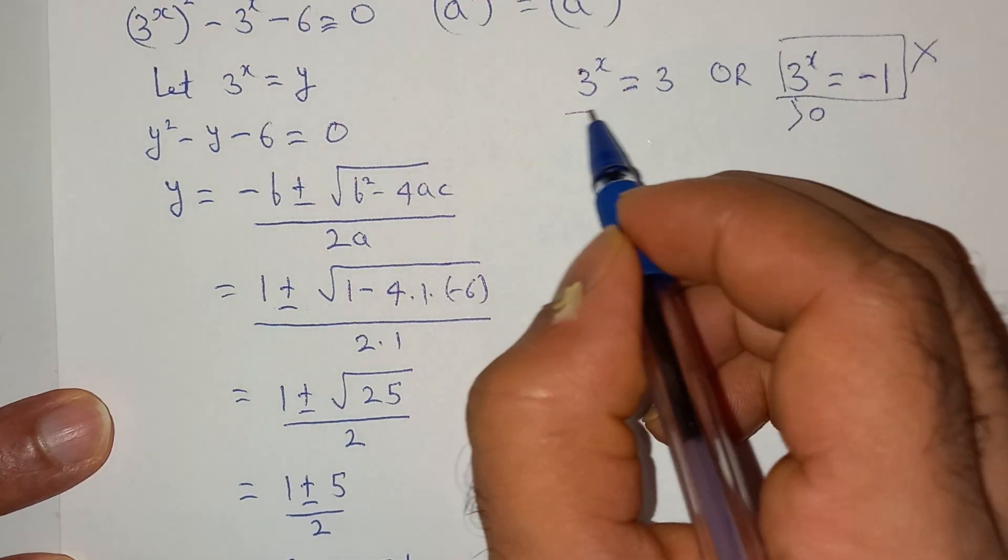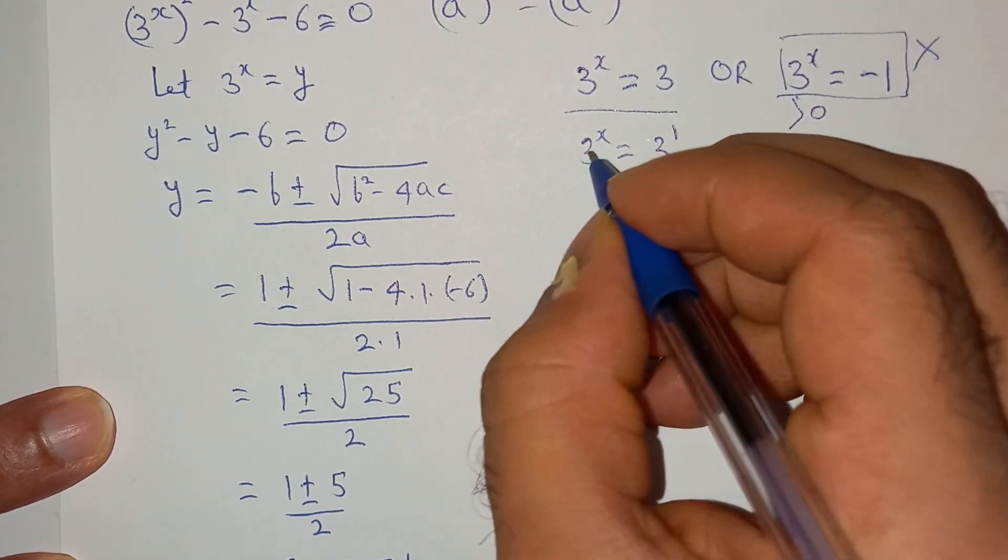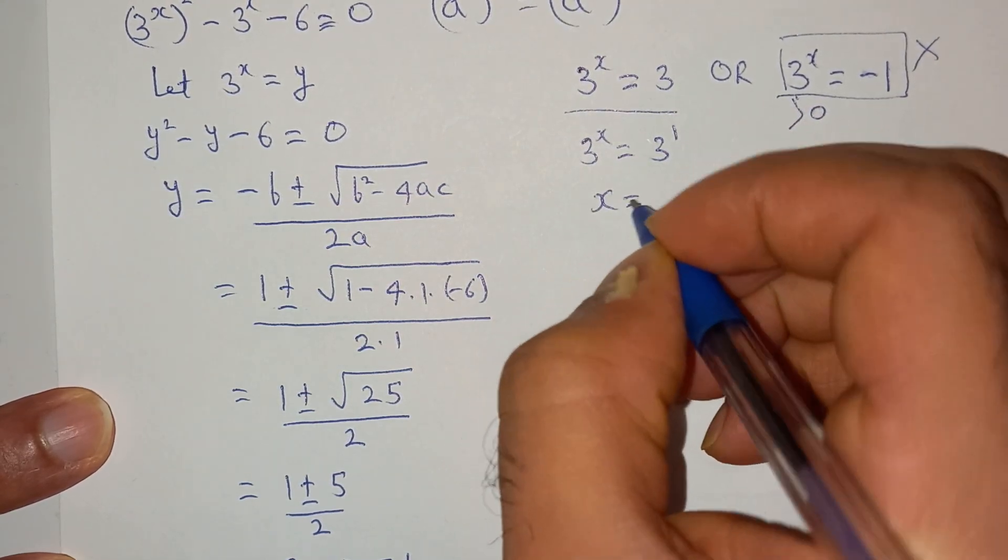So we are left with this one, which is 3 power x equals to 3. So x equals to 1.